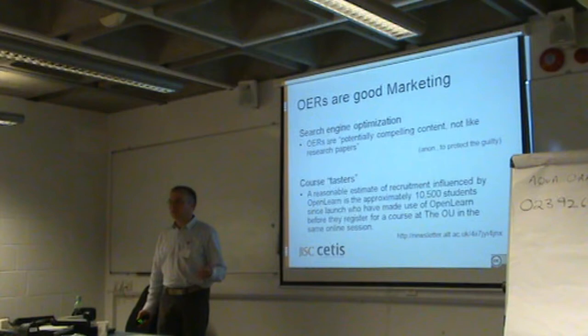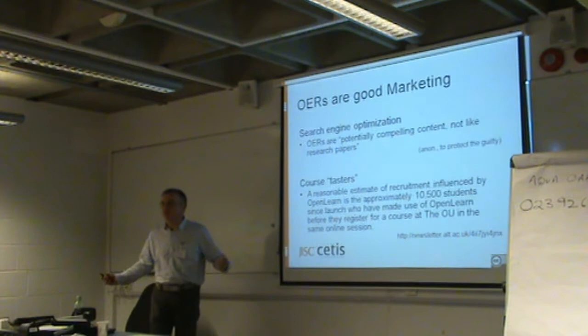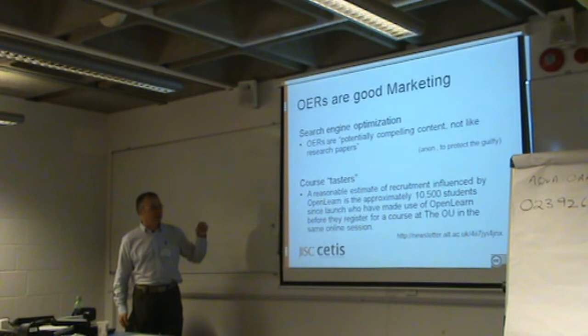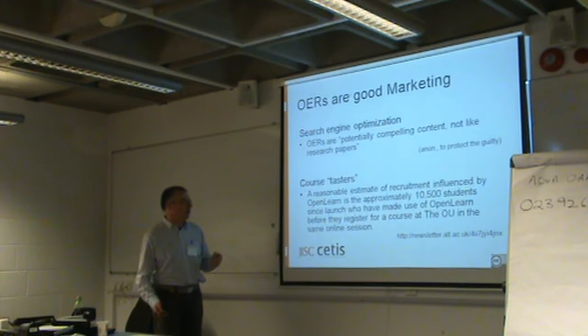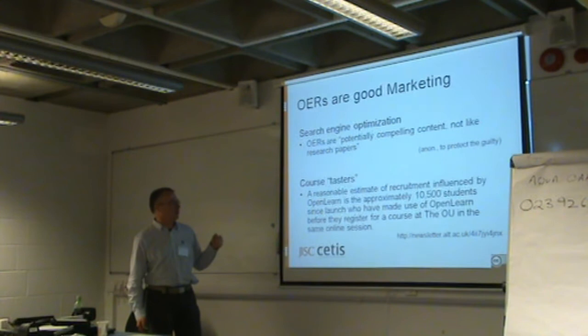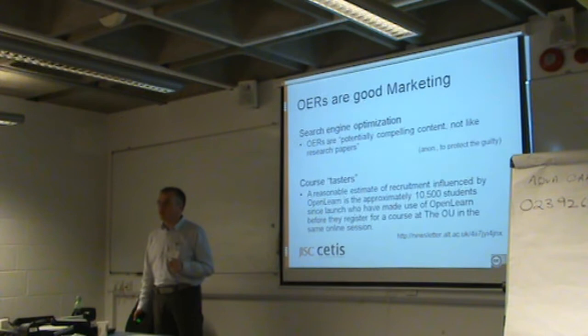It's no good telling a 17-year-old that you do systems integration in your computer science degree, because they won't know what that means. The effect that this can have comes from Open Learn, which is the Open University's initiative. A reasonable estimate of recruitment influenced by Open Learn is approximately 10,500 students since launch who have made use of Open Learn before they registered for a course at the OU in the same online session. And that's the sort of figure that gets a principal or vice-chancellor sat up and listening.